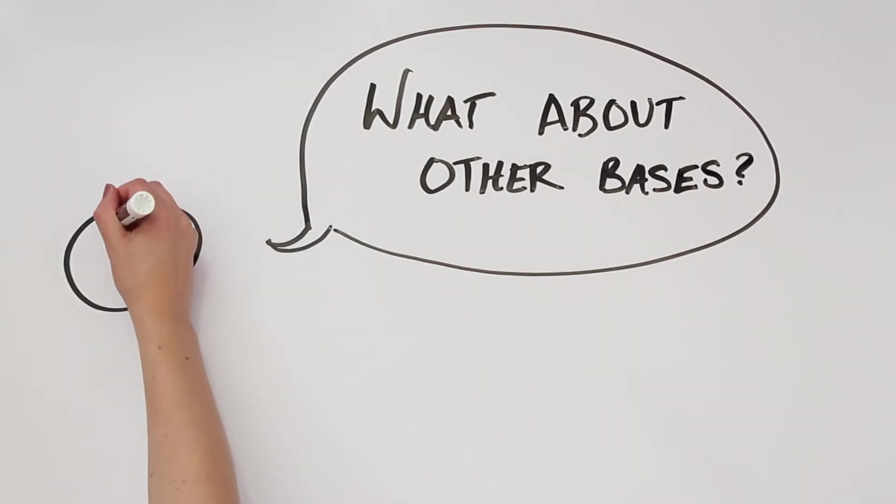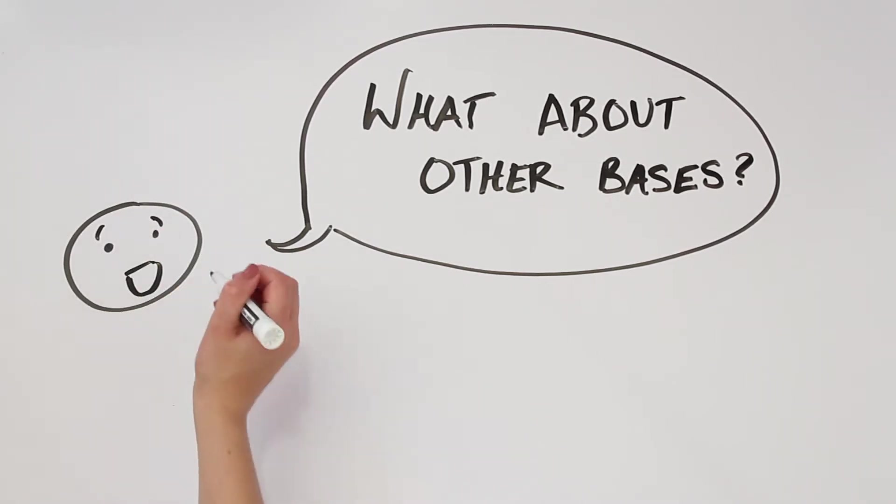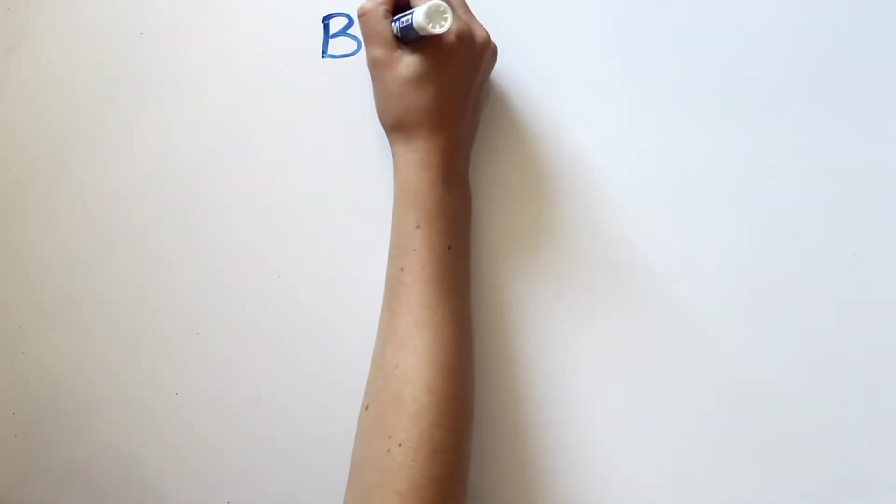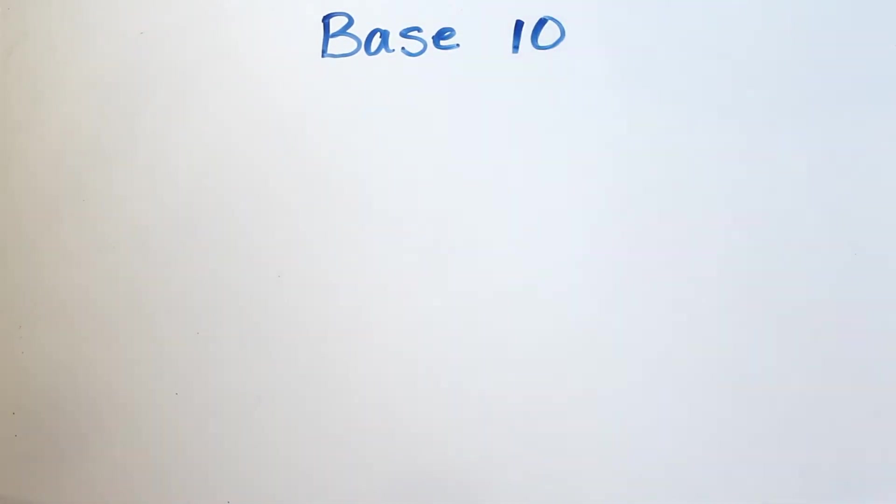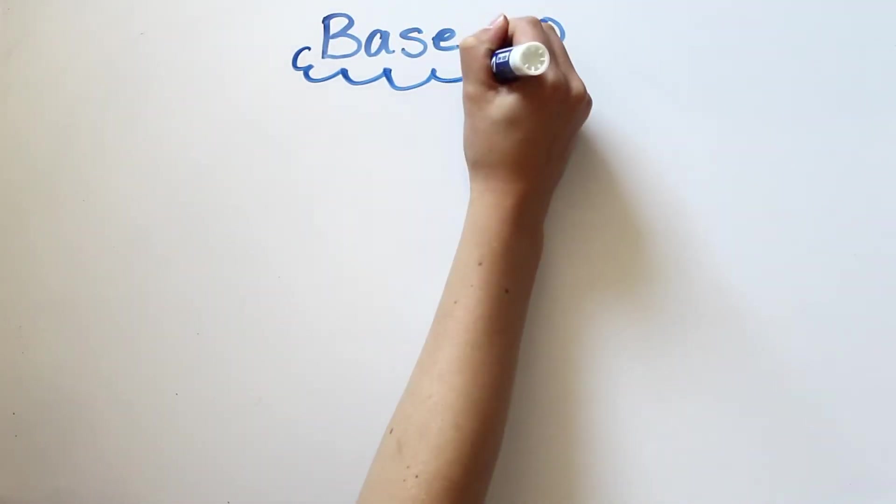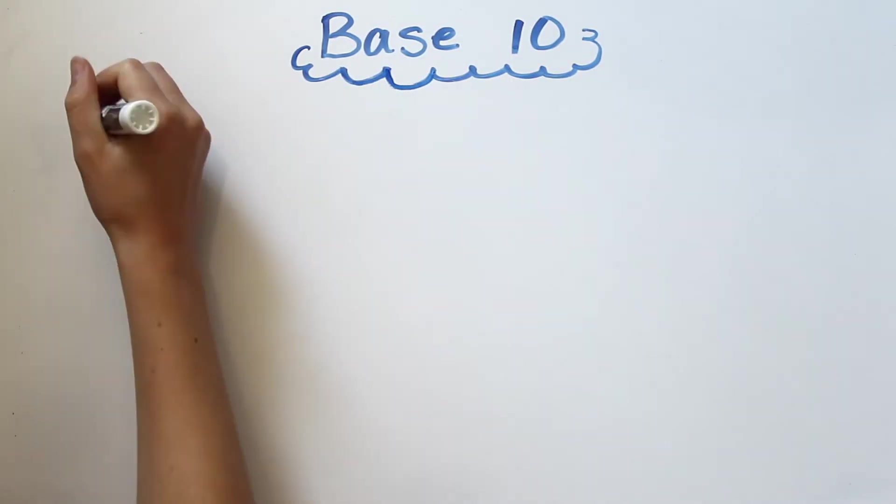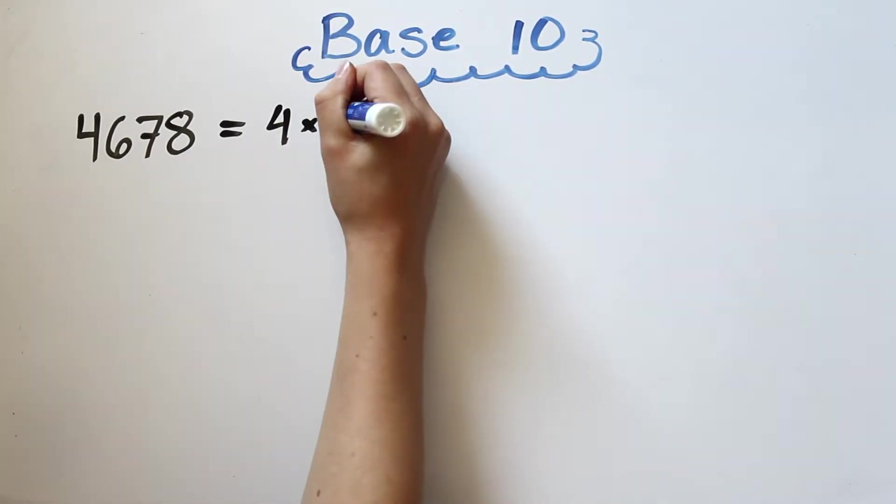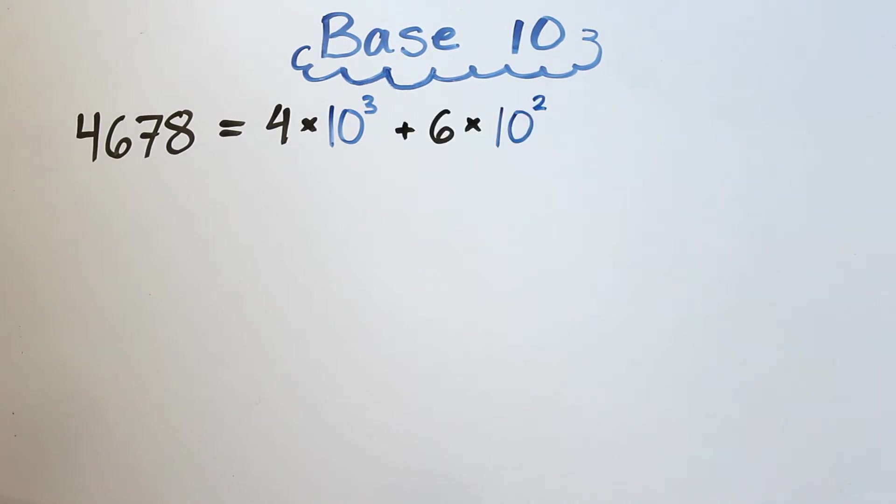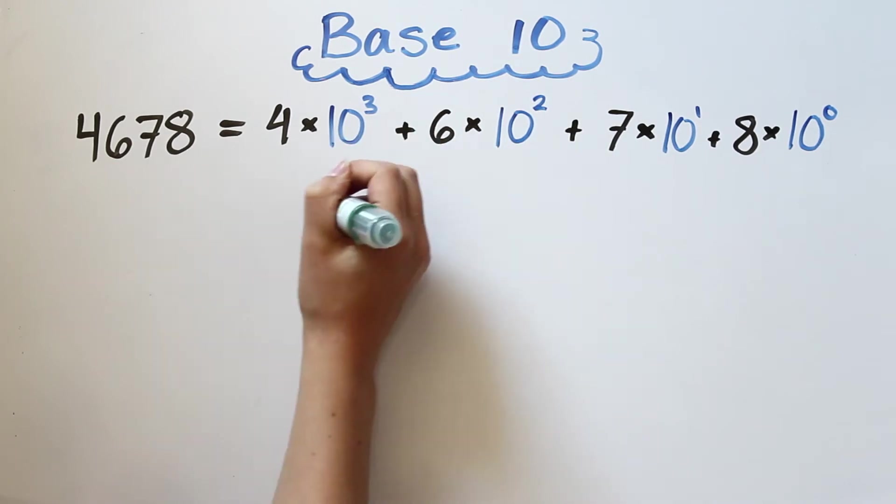If you've never heard of other bases before, I encourage you to look at other sources as well, since this isn't the focus of this video. I will leave a link in the description where you can get more information. When we represent a number in standard notation, it is actually shorthand for the sum of powers of 10. For example, 4,678 is 4 times 10 cubed plus 6 times 10 squared plus 7 times 10 to the first power plus 8 times 10 to the 0.